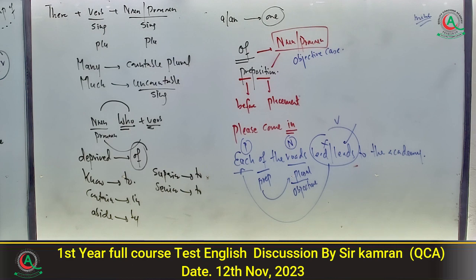Next spot the error: 'The police arrested an Australian and an European tourist۔' یہاں 'an European' غلط ہے — European کی آواز یعنی pronunciation 'یو' سے شروع ہوتی ہے جو consonant sound ہے، اس لئے 'a European' ہونا چاہیے۔ Option number C میں error ہے۔